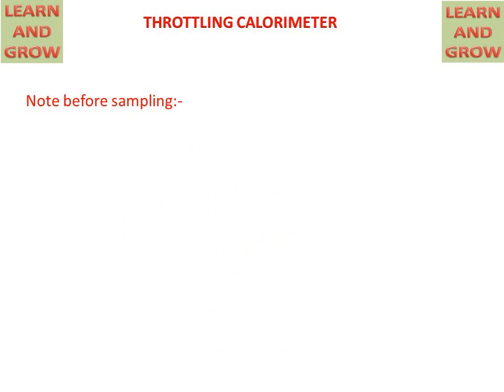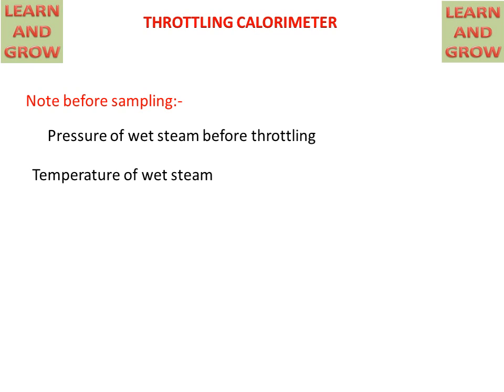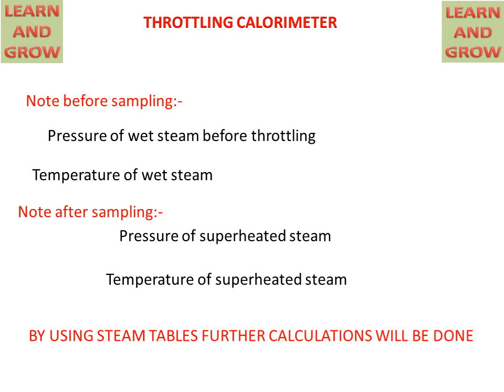Note: before throttling, we have to measure the pressure of wet steam before throttling and the temperature of wet steam. And after throttling of the wet steam, steam will be superheated. So pressure of the superheated steam will be calculated and temperature of the superheated steam will be calculated. After this, steam tables will be used for further calculation to measure the dryness fraction of the steam.